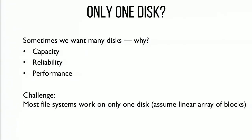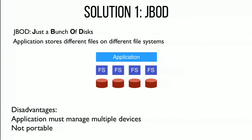Today we are talking about RAID. In our previous lecture we looked at a single disk, but sometimes we want more than that. Reasons for having more than one disk: you might need more capacity, more reliability, the ability to keep working when a disk fails, or higher performance. But most file systems assume a linear array of blocks, so we have to provide that interface. One solution is 'just a bunch of disks' (JBOD) — mount a different file system on every disk or partition.